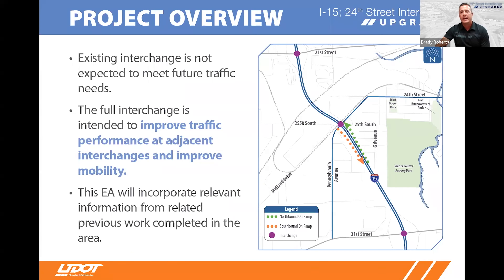At I-15 and 24th Street today, we have a half interchange. For northbound users, there's an off-ramp to 24th Street as well as a southbound on-ramp to I-15. This is a half interchange, meaning drivers cannot make the other movements — getting on northbound or getting off southbound. Our initial traffic analysis shows that this existing interchange will not support traffic needs in the Ogden area when looking at future projections out to the year 2050. Converting the 24th Street interchange into a full interchange will benefit drivers through this interchange as well as adjacent interchanges at 31st Street and 21st Street, which would experience less delay and handle more vehicles efficiently.